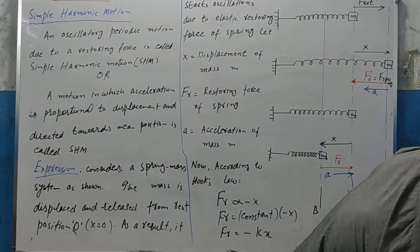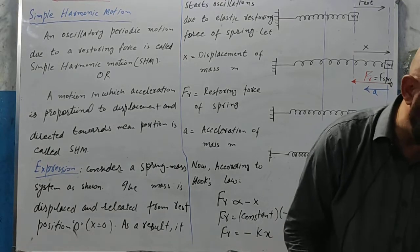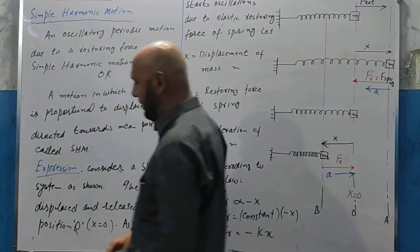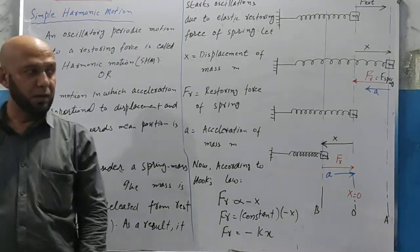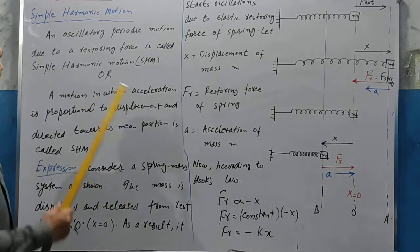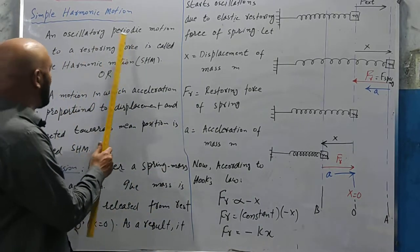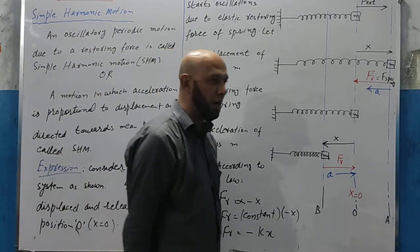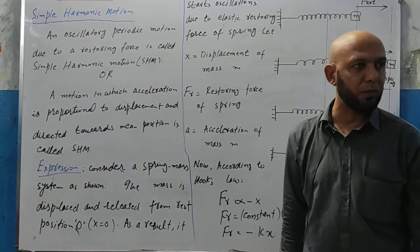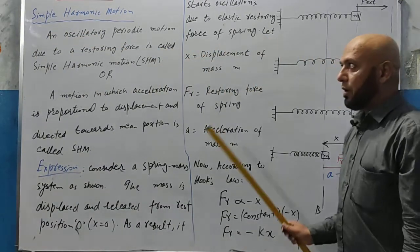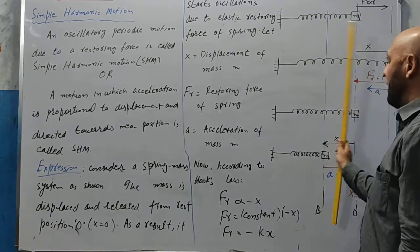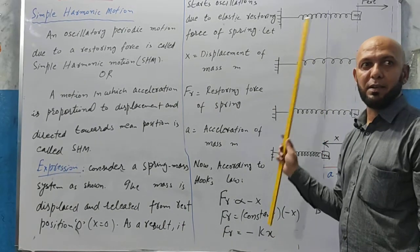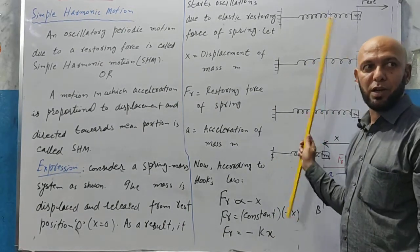So, the definition of simple harmonic motion: an oscillatory periodic motion due to a restoring force is called simple harmonic motion. Oscillatory motion is also periodic. This restoring force is key to the definition.